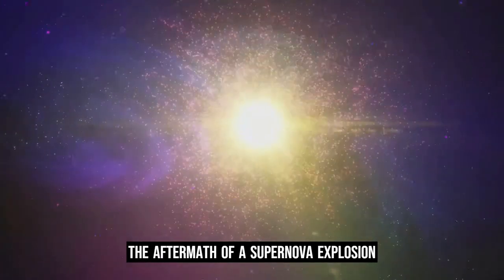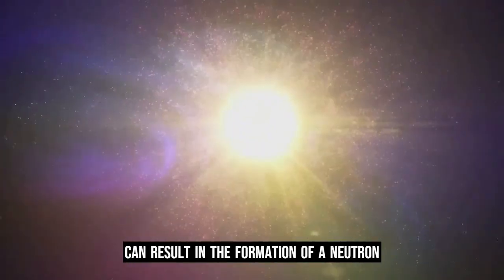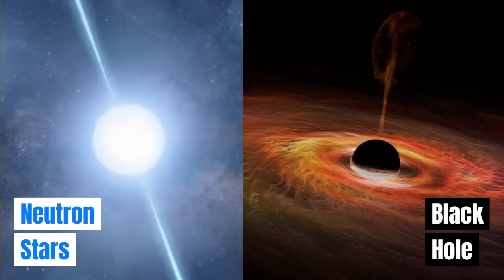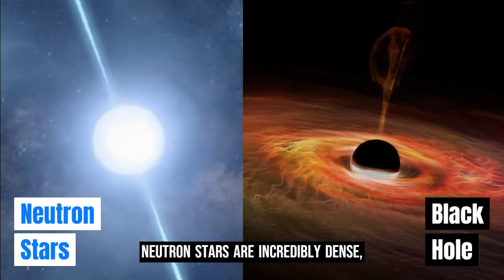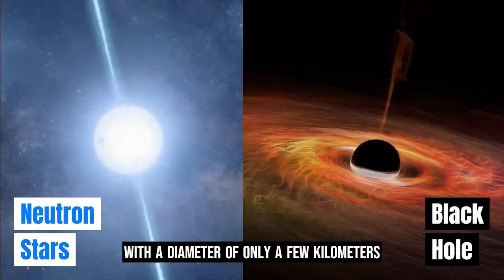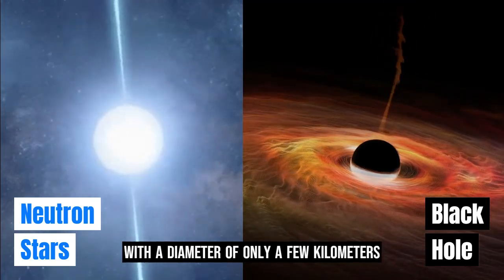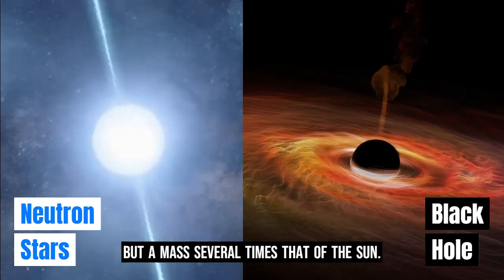The aftermath of a supernova explosion can result in the formation of a neutron star or a black hole. Neutron stars are incredibly dense, with a diameter of only a few kilometers but a mass several times that of the Sun.